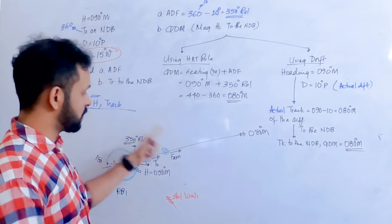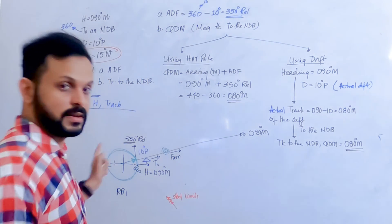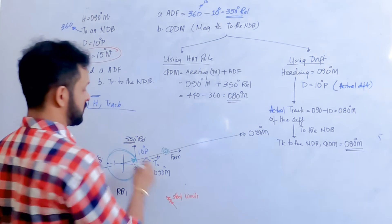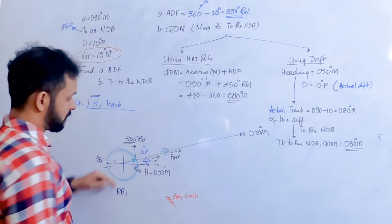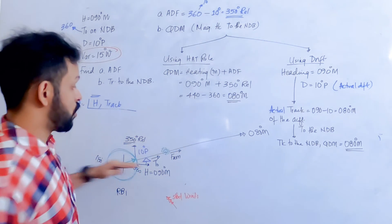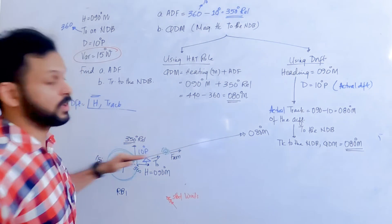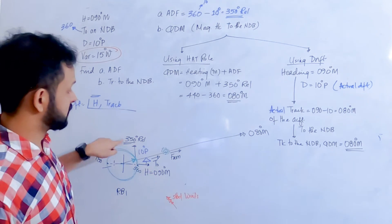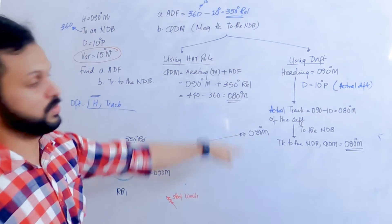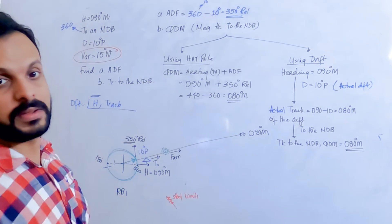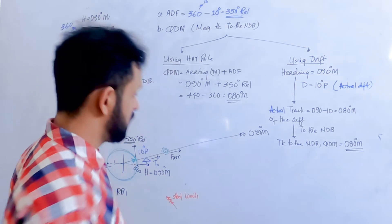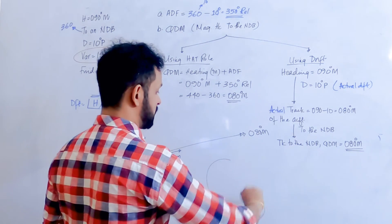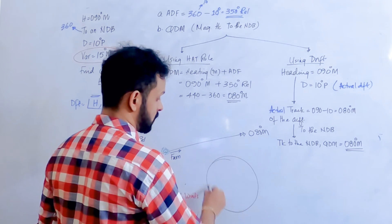You can see the entire system analyzed using the dial. The track of the aircraft is also 080 degrees. The QDM — heading 090 plus ADF 350 — equals 440, which is again 080 degrees. Let's now draw the RBI indication and also the RMI.